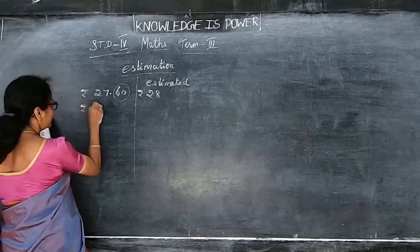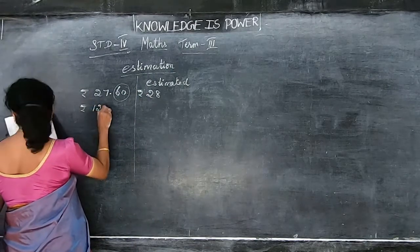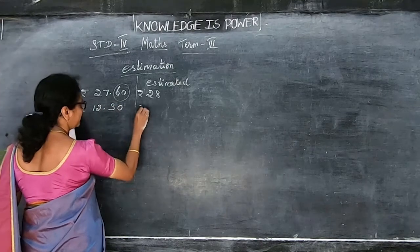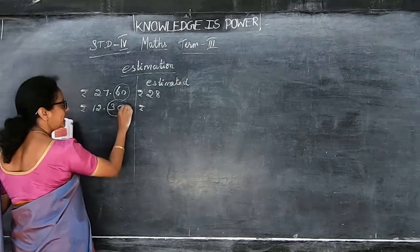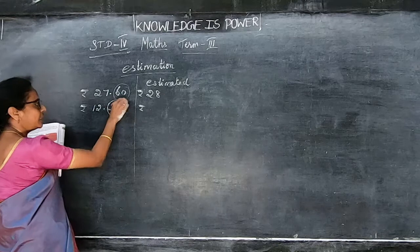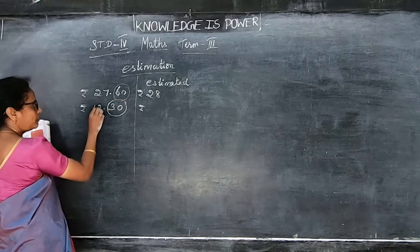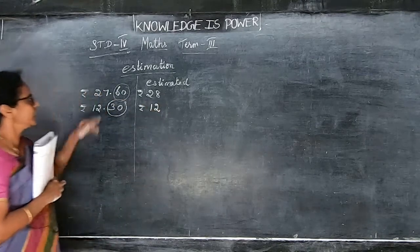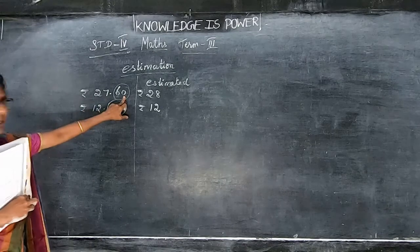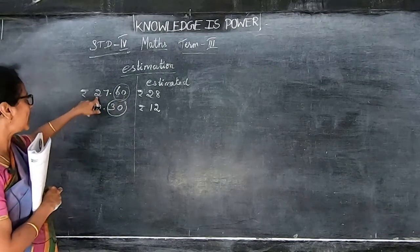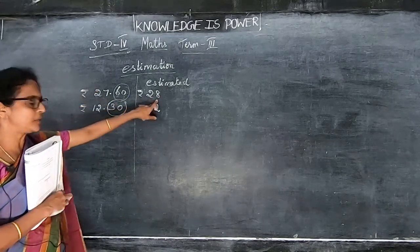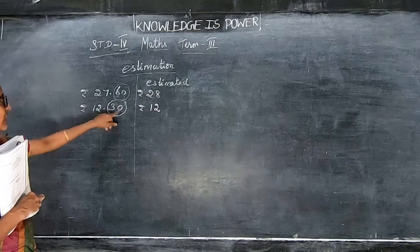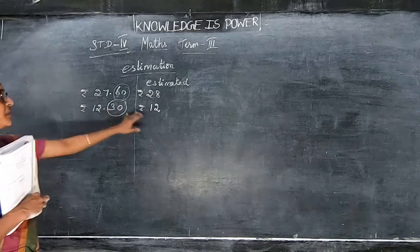For example, rupees 27 rupees 60 paise — 60 paise is more than 50, so we add 1 to the rupees: rupees 28. And rupees 12 rupees 30 paise — 30 paise is less than 50, so we keep the number as rupees 12.